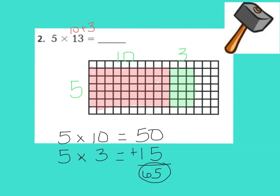In order to get our final product, we need to add them. So we know that 50 plus 15 gives me 65. 65 is the product of 5 times 13, which is our final answer.